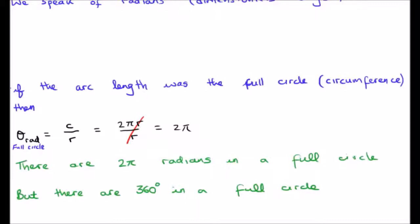So that means, as I said, we have two pi radians in a full circle, in contrast to having 360 degrees in a full circle.